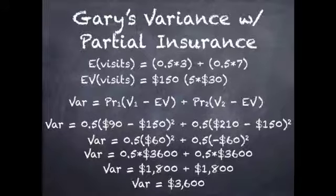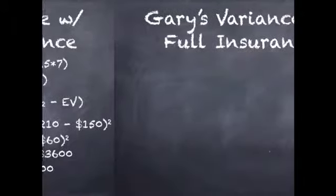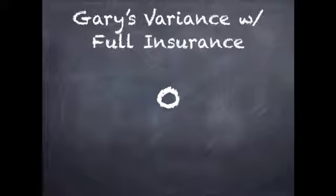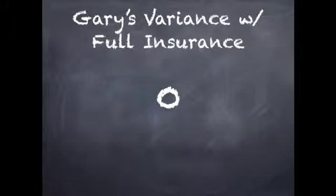The variance under full insurance is equal to zero. Once Gary makes his premium payment at the beginning of the year, 100% of his costs of going to the doctor are covered. Therefore his expense equals that fixed premium regardless of his healthcare utilization, so there is no variation in his healthcare costs.